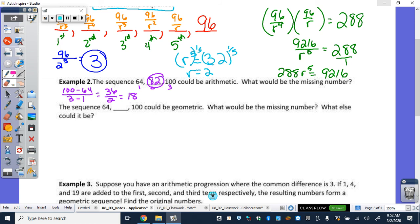So, then, 64 comma blank 100 could be geometric. So, what would be the missing number, if it were geometric? So, I'm going to call this an x for now. We use the ratios for this one. The second term over the first term has to equal the third term over the second. Cross multiply. X squared equals 6400. Square root and x equals plus or minus 80. So, it could be positive 80 or it could be negative 80. So, it could be positive 80. What else could it be? It could be negative 80.